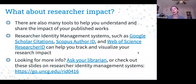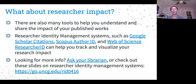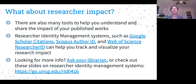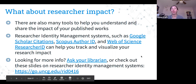Researcher impact is also part of this. There are tools to help you understand and share the impact of your work. Google Scholar Citations, Scopus Author ID, and Web of Science Researcher ID are three free tools that can help you track and visualize your researcher impact — citations, readership, and things like that. There are whole presentations linked at the bottom of this slide on that topic, and librarians can also help.